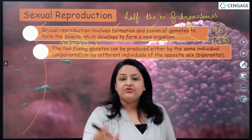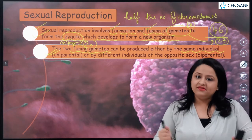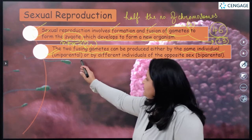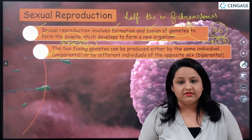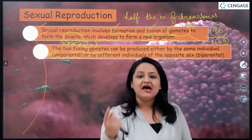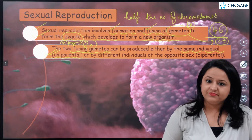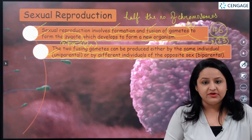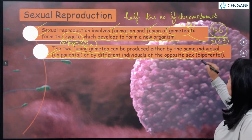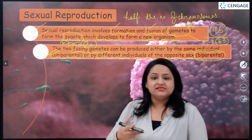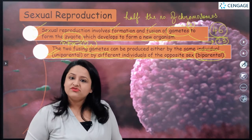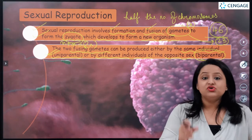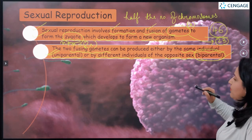This is in contrast to what we studied in younger classes — that sexual reproduction always involves two organisms — but that is not always true. Sexual reproduction can also be uniparental, though two different gametes must surely be present. The other type involves gametes obtained from different individuals of the opposite sex, called biparental reproduction. For example, in humans the male gamete comes from the male and the female gamete from the female, so humans undergo biparental sexual reproduction.